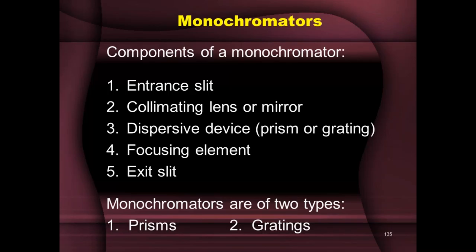So we have two slits — entrance slit and exit slit — and in between them, two lenses or mirrors. The collimating lens makes the radiation parallel before it hits the dispersive device, and then the parallel radiation coming out of the dispersive device is focused onto the exit slit. The main component is the dispersive device, which could be a prism or grating. Based on what is present, we say monochromators are of two types: prism-based or grating-based.